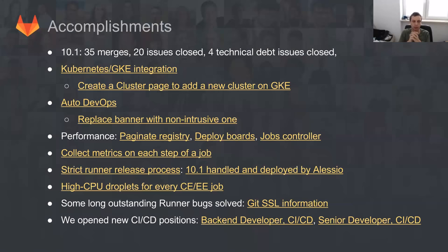As for the accomplishments comparing to 10.0 — if you click the link of the presentation from last release, we had way more merges and way more issues closed. But 10.1 was basically very focused on having Kubernetes out the door — Kubernetes GKE integration — so the first iteration of allowing you to create a GKE cluster, but also a lot of different performance and backstage improvements: we improved paginated registry, deployables, and jobs controller. We also introduced some functions that we'll be using later for allowing you to see information about each step of a job and the performance of each step.